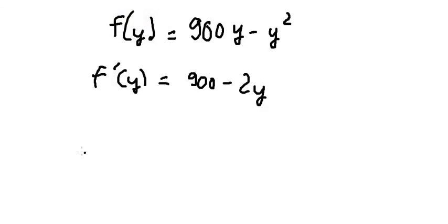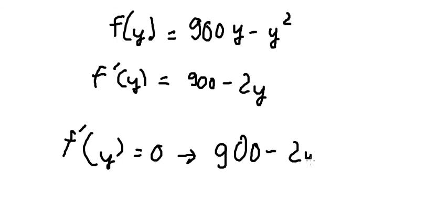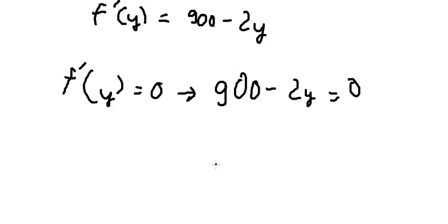So we put this one equals to number zero. That means 900 minus 2y equals to number zero. So y in here is about 900 divided by number 2, and we have 450 yards.